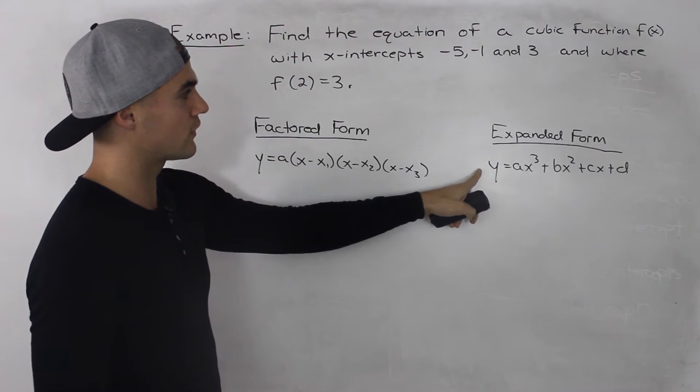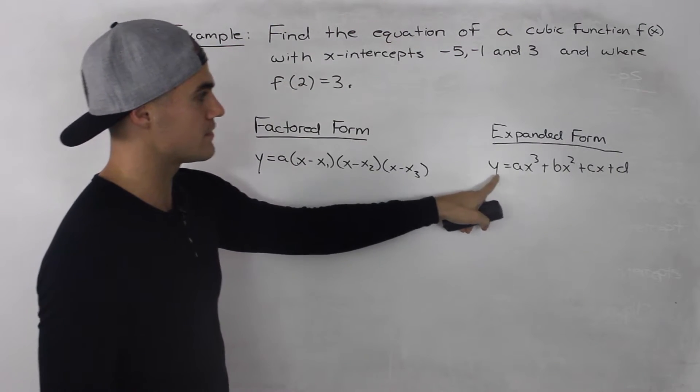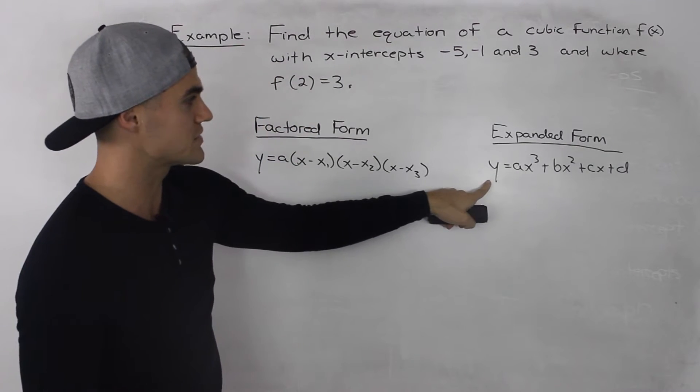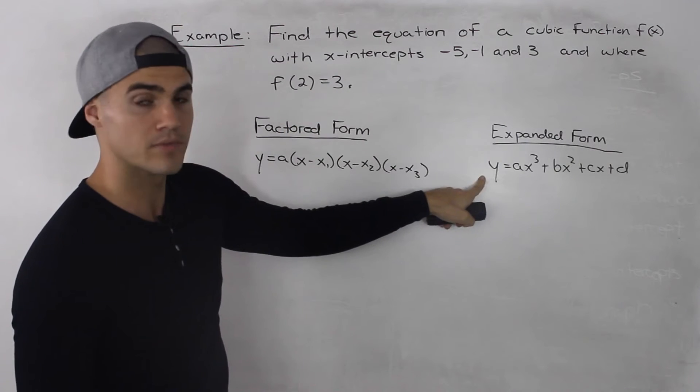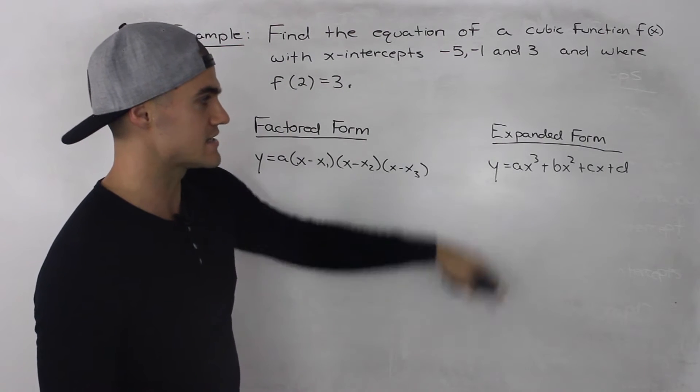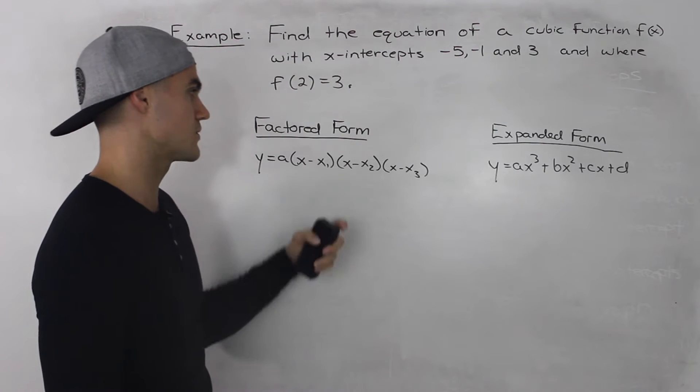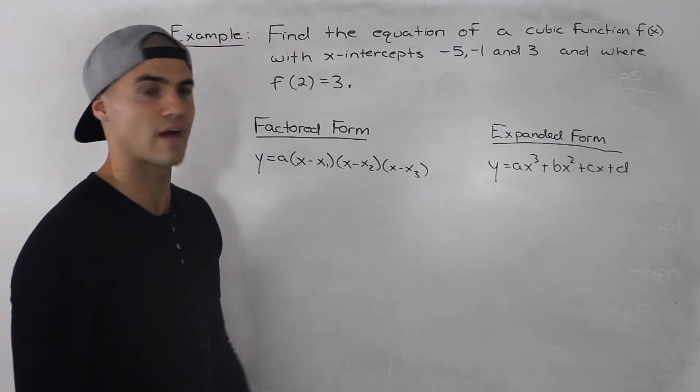We can also figure out the a, b, c, and d in expanded form by plugging these in, making y equal to 0, and then plugging this point in and solving for a, b, c, and d. But that will take us a long time. We'll have four equations with four unknowns, so it's easier to just go with the factored form.